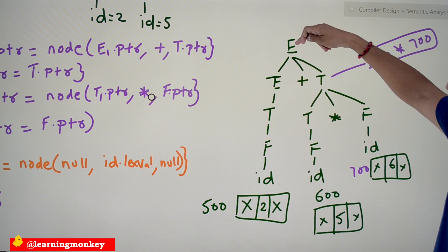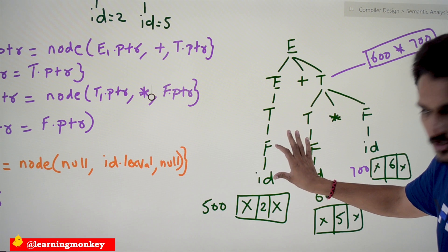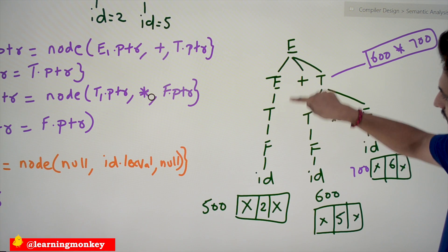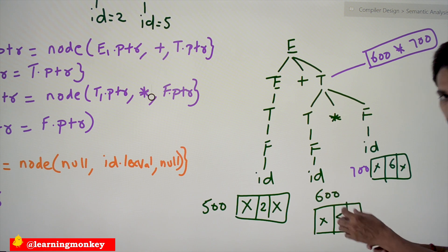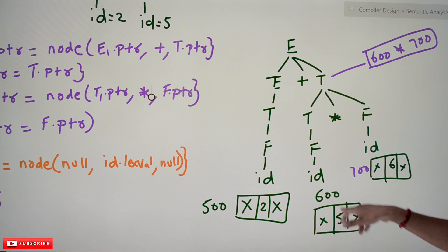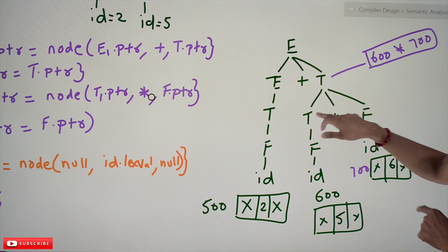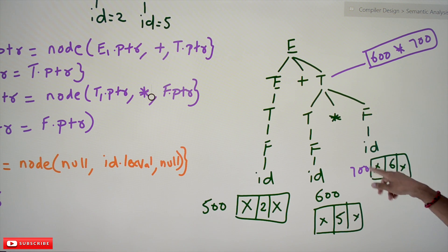Let's trace the example. Executing E → T, E → E + T, T → F, F → id: when F → id finishes, a node is created with value 2, null left and right, assigned address 500. F.ptr = 500, T.ptr = 500, E.ptr = 500. Then it checks for plus, expands T → F → id, gets value 5 — a new node created with null left and right at address 600. Then it checks for star, executes F → id, a new node with value 6 at address 700, so F.ptr = 700.